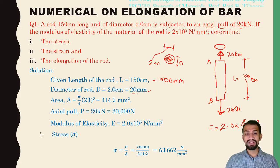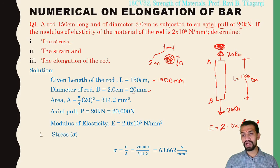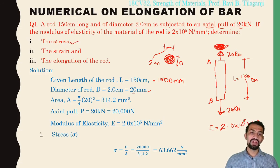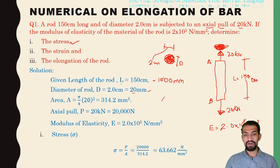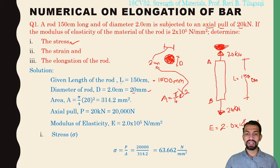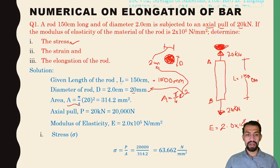Now, finding the cross-sectional area of this circular section — the area is what we need to calculate the stress. The formula is A = π/4 × D². Substituting D = 20 mm: A = π/4 × 20² = 314.2 mm².